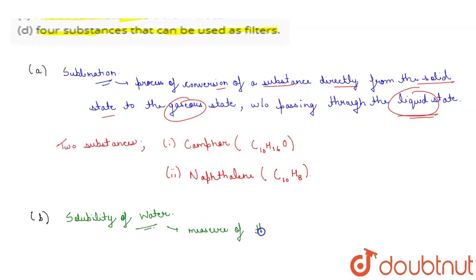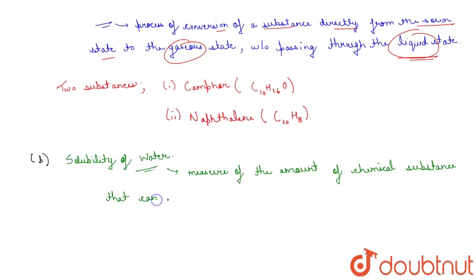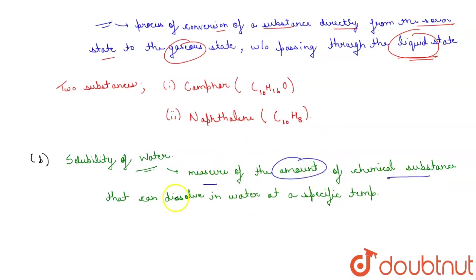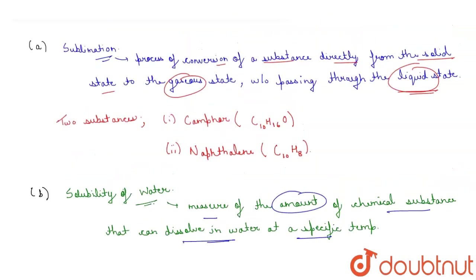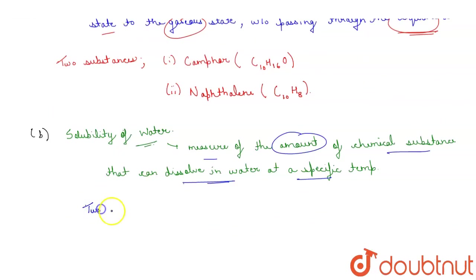Solubility of water is a measure of the amount of chemical substance that can dissolve in water at a specific temperature.